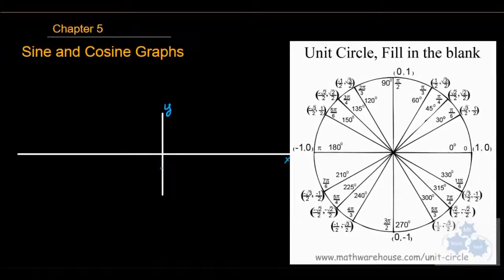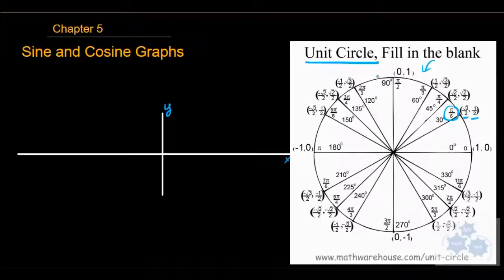The unit circle is just a special way of showing how angle measures are related to the cosine and the sine for that angle measure. That's what we've been using the unit circle for. This is one way of displaying that information. We could also use x and y and put all of this on a Cartesian plane, which is this x-y plane over here.